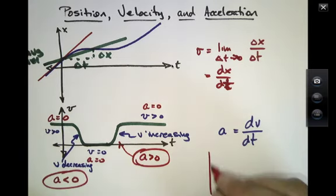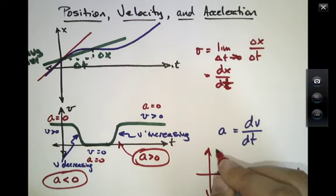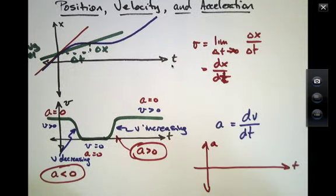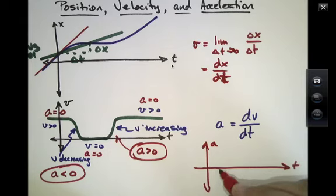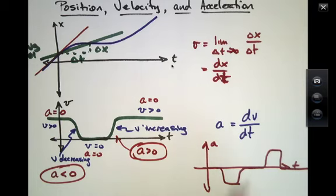So if we were to graph acceleration, it would look something like this. It would be 0. It would ramp down to a negative number. Then become 0 again. Ramp up to a positive number. And continue on, being 0. So these two blips, this one and this one, correspond to these two regions right here and right here.